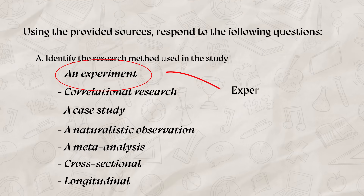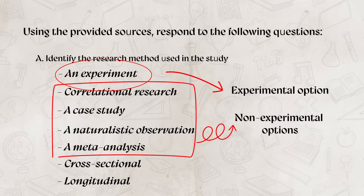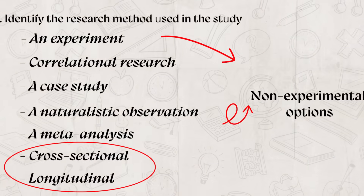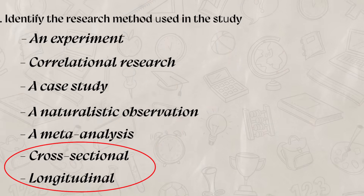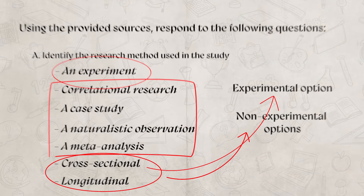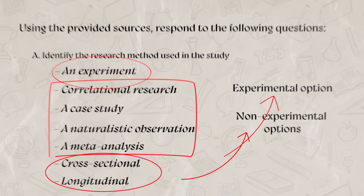We've now covered the five main answers you can give on the AAQ — one experimental method and four non-experimental methods. But what about the other two possible answers: cross-sectional and longitudinal? These are design options for research. If you use one of these two terms as an answer for Part A, you'll most likely want to connect it to the experimental or non-experimental options. Think of longitudinal and cross-sectional as adjectives — design options for a research method.